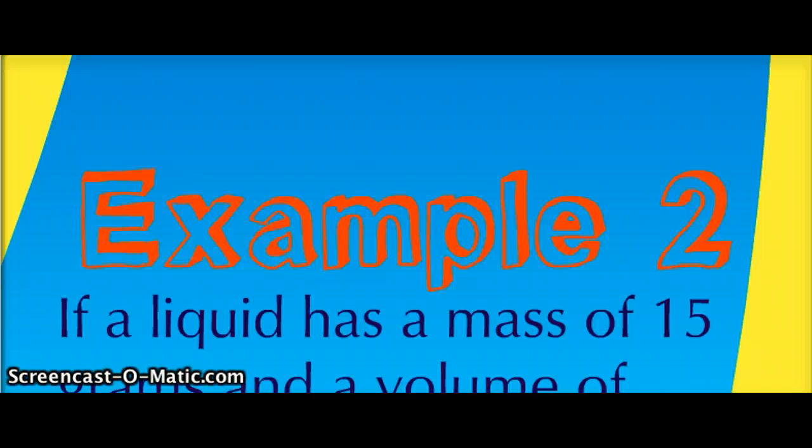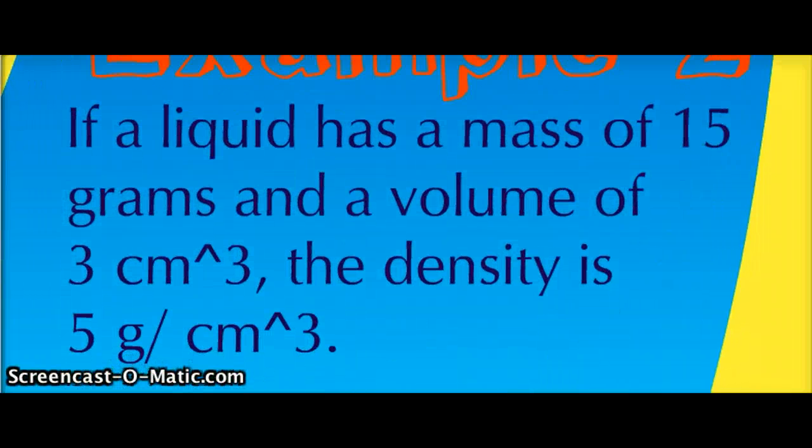Example number 2. If a liquid has a mass of 15 grams and a volume of 3 centimeters cubed, the density is 5 grams per centimeters cubed.